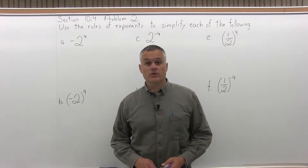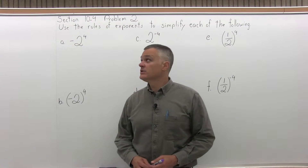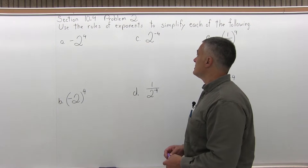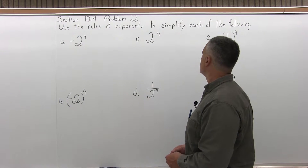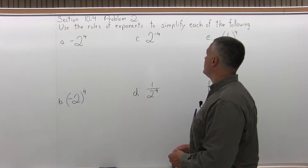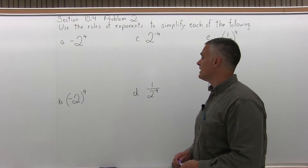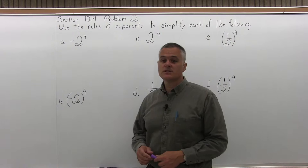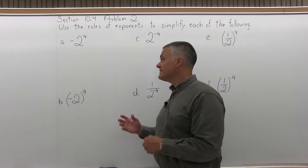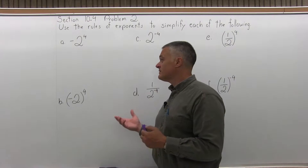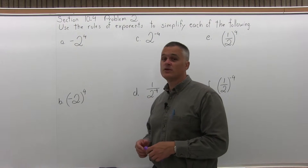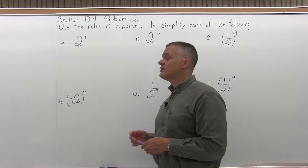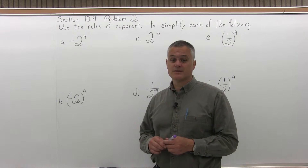This is Section 10.4, Problem 2. It says: use the rules of exponents to simplify each of the following. There are six different things that look fairly similar — they all have some type of 2 to the 4, some positives, some negatives, but there are differences.